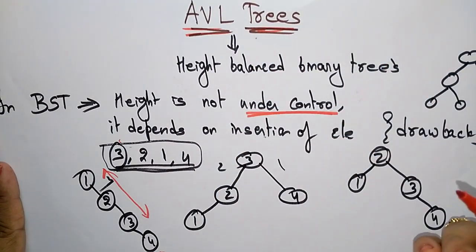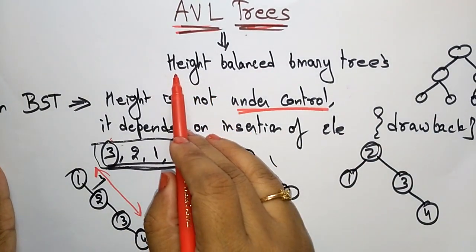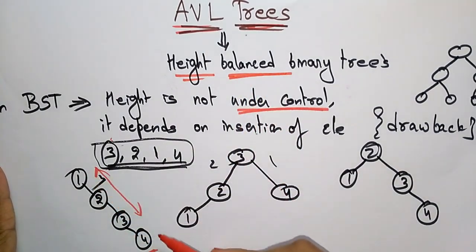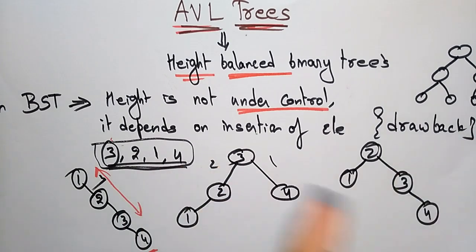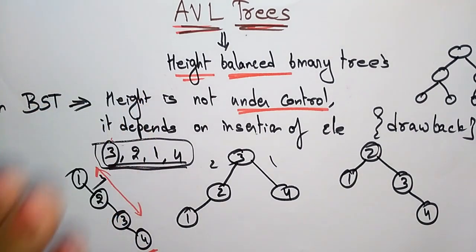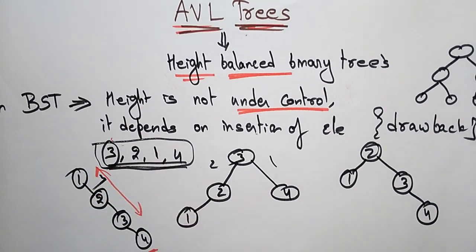To avoid this drawback and improve binary search tree efficiency, we use AVL trees. The AVL tree is going to maintain the height balance — whatever the height is, it maintains the height balance for whatever pattern you have taken, so everything will be balanced.